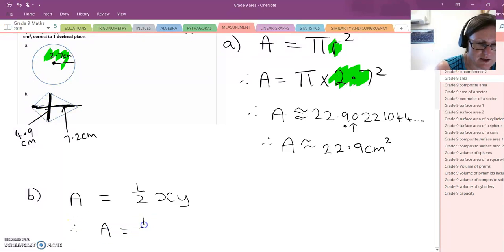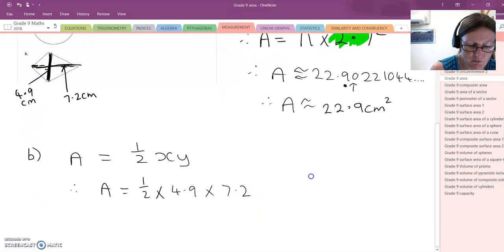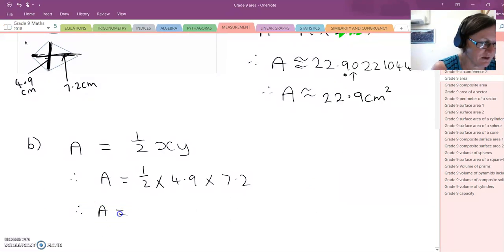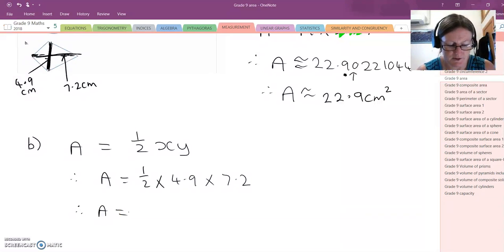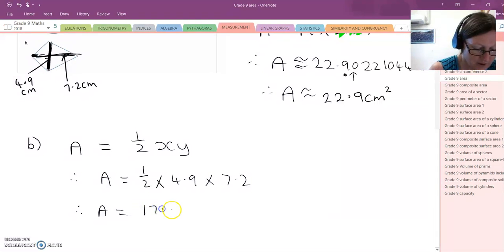So we just substitute half times by, this was our x, so 4.9. This was our y, which is 7.2. So we've substituted in. So we simply put that into our calculator. 1 half times 4.9 times 7.2, which is equal to 17.64 centimetres.